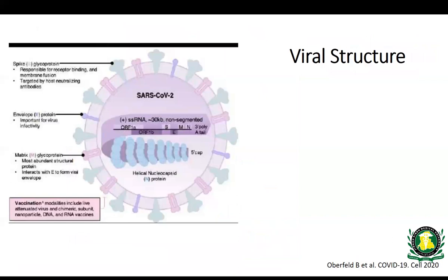A little about the structure of the virus: this is a single-stranded RNA virus. It has a number of proteins. The helical nucleocapsid protein (N protein) is bound to the RNA genome in a helical capsid. The virus has an envelope containing several other proteins: the matrix M lipoprotein (shown in pink), the envelope E protein, and lining the entire envelope is the spike S glycoprotein, which is very important in viral replication.